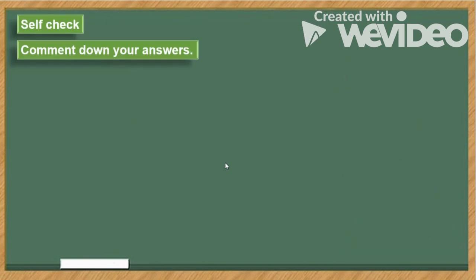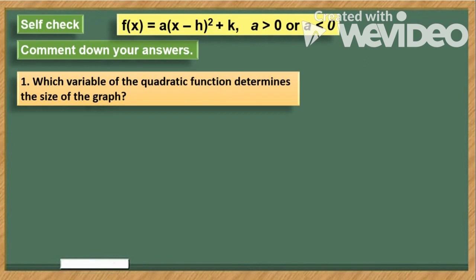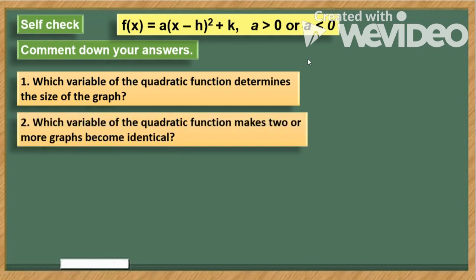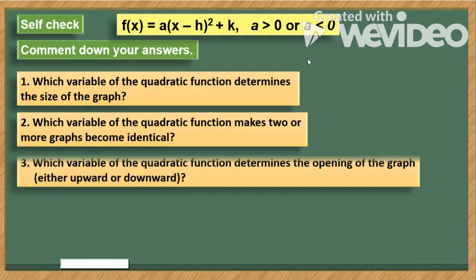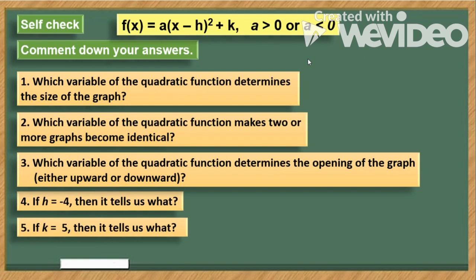Now let's have a self-check. Do not forget to comment your answers below. Number 1: Which variable of the quadratic function determines the size of the graph? Number 2: Which variable makes two or more graphs become identical? Number 3: Which variable determines the opening of the graph — upward or downward? Number 4: If h is equal to negative 4, then it tells us what? Number 5: If k is equal to 5, then it tells us what?